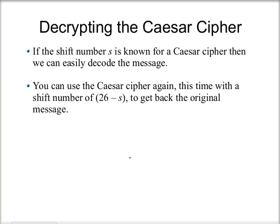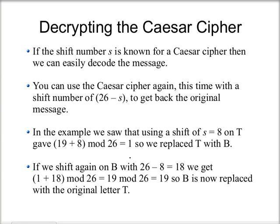If we know the shift number used to encrypt a message, we can also decrypt or decode that message. To do that, we apply another Caesar Cipher but with a shift number of 26 minus S, which gets you back to the original letter. So in the example, a shift of 8 on T took 19 to 1, replacing T with B. If we shift B again with 26 minus 8, which equals 18, that takes 1 back to 19 — so B is replaced with the original letter T. This undoes the encryption.